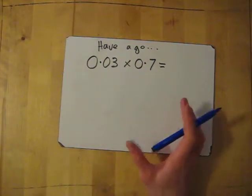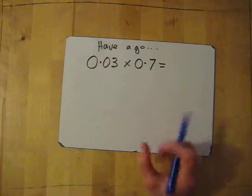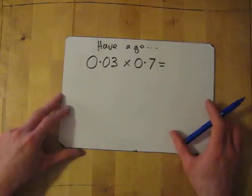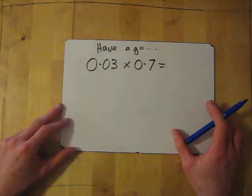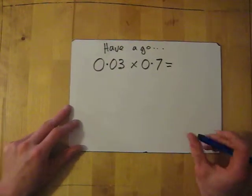So, remember, forget about decimals. Do it. How many decimal places are in the question? That's all I need in the answer. So have a little go. Pause this. I'll go through it in 3 seconds. So 3, 2, 1.